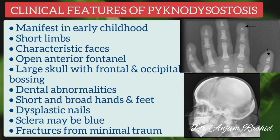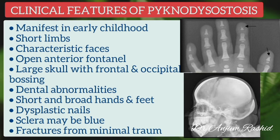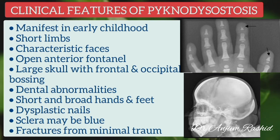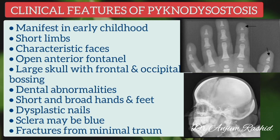Pycnodysostosis usually manifests in early childhood. Features include short limbs, characteristic facies, open anterior fontanel, large skull with frontal and occipital bossing, dental abnormalities, short and broad hands and feet, dysplastic nails, and blue sclerae. Fractures are common with minimal trauma.